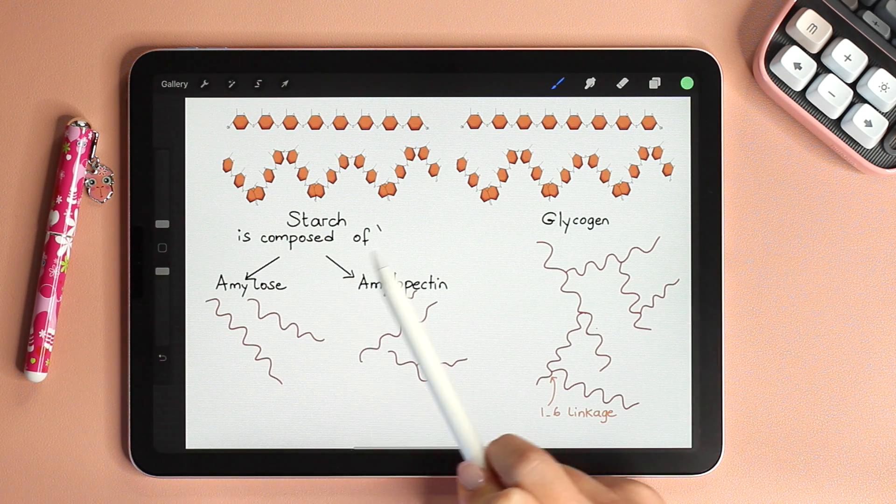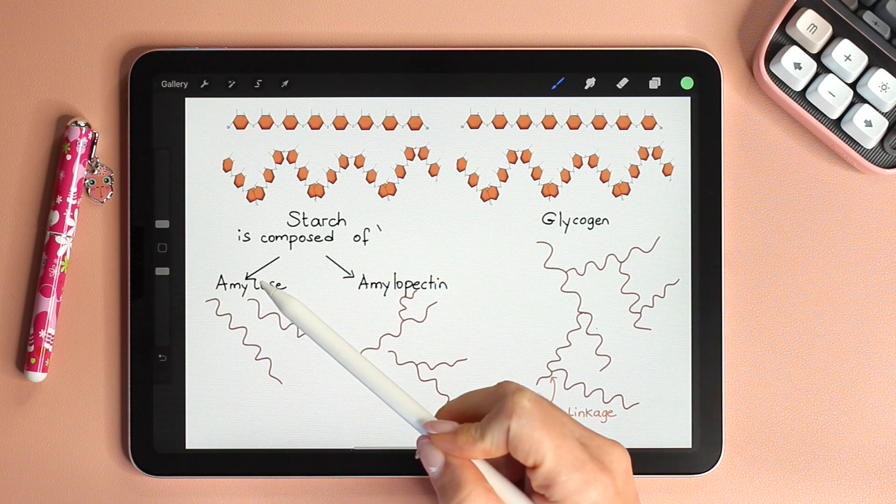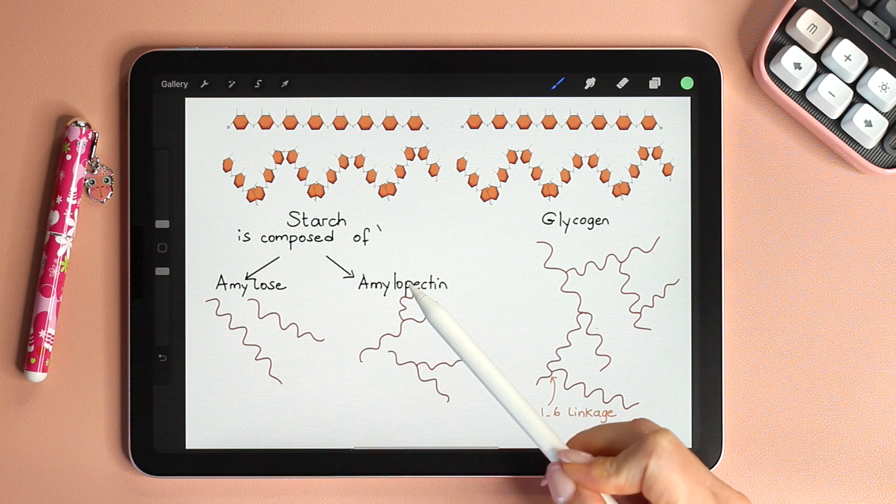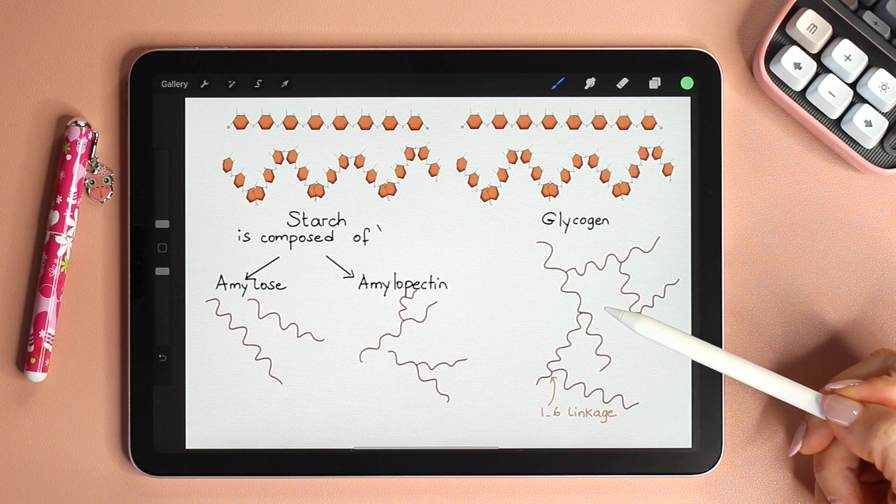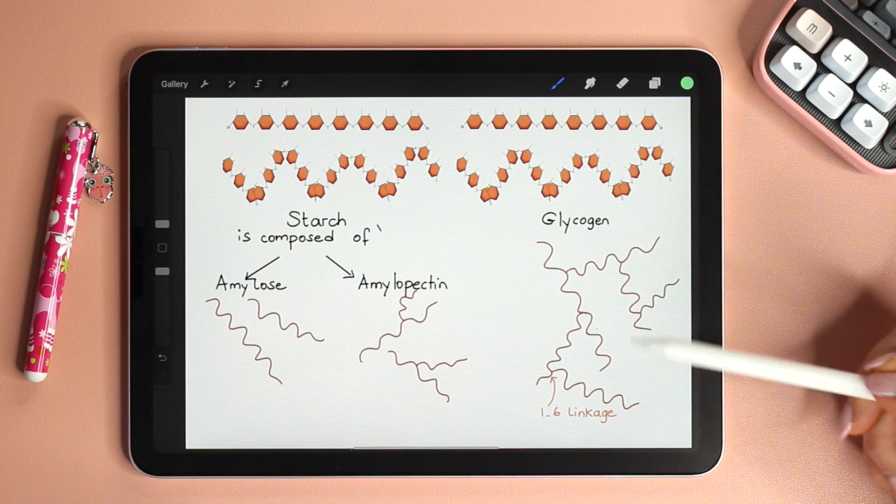Starch is composed of amylose and amylopectin. Amylose is unbranched, amylopectin is branched. Glycogen is branched as well but way more than amylopectin.